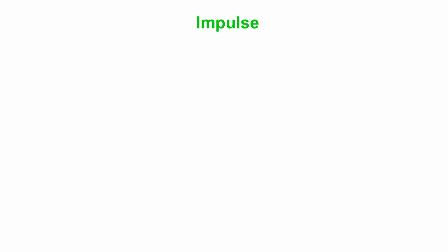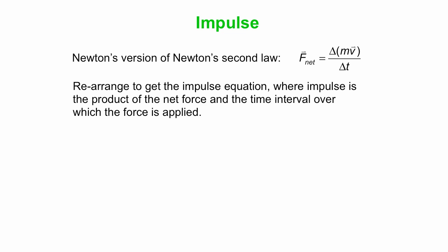Now we'll talk about something we call impulse. There's our equation we just looked at, Newton's version of Newton's second law. For one thing, we should come up with a name for this quantity mv. We'll do that in a minute. But we'll rearrange it first and say that F_net times Δt is the change in this quantity m times v. We call that the impulse.